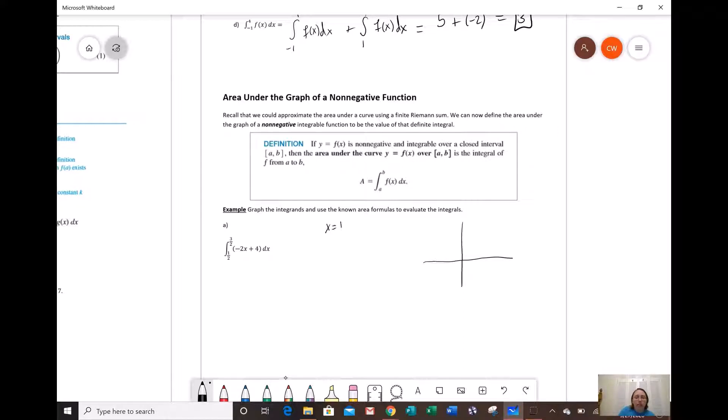Let's just plot these two points here. So if x is 1 half, what is the corresponding y value? Negative 2 times 1 half, and then plus 4. So negative 1 plus 4 is 3. So there's our first point. If x is 1 half, y is 3.